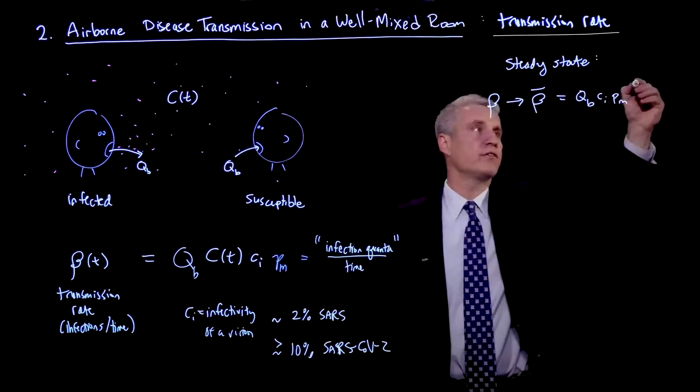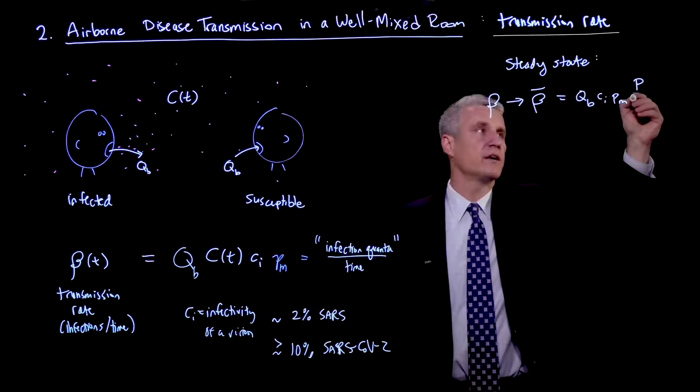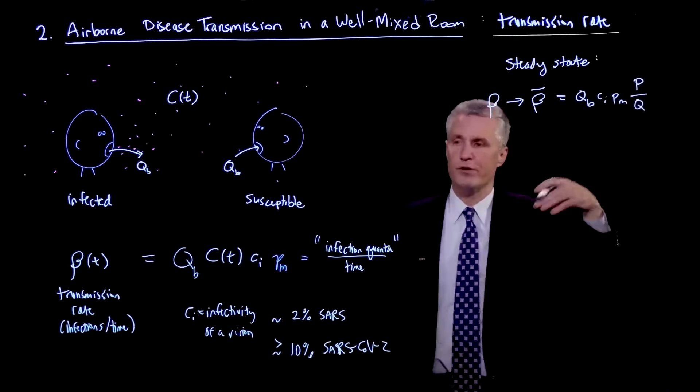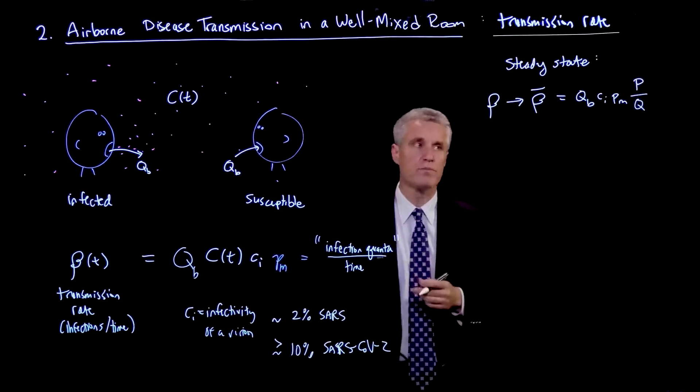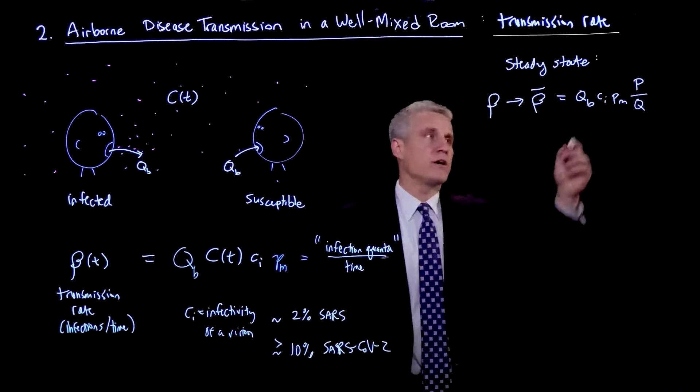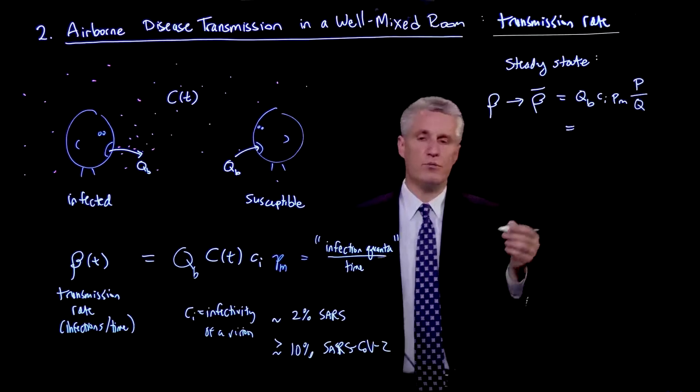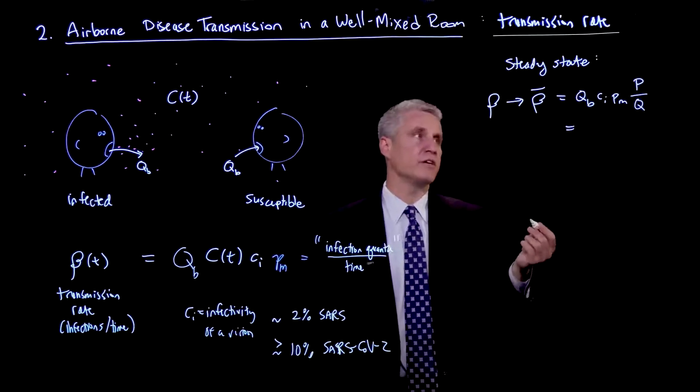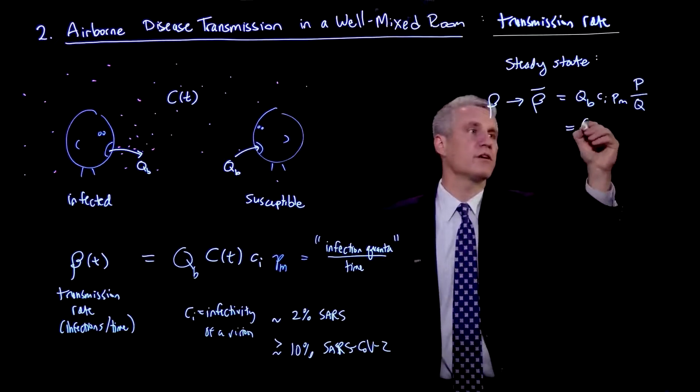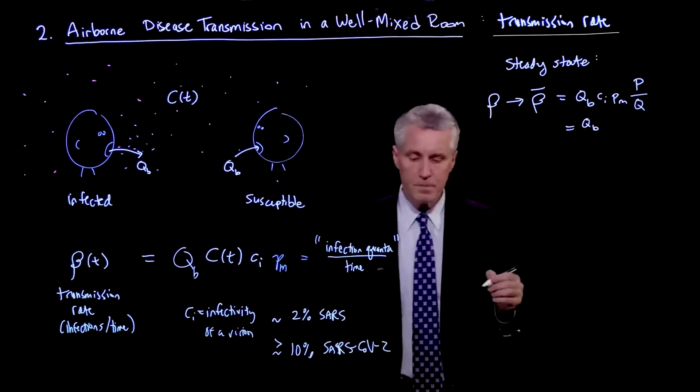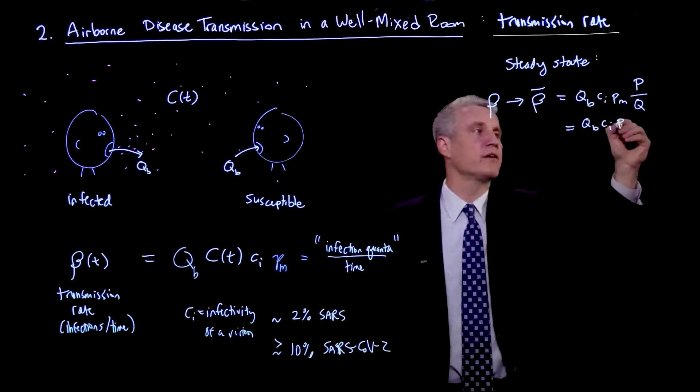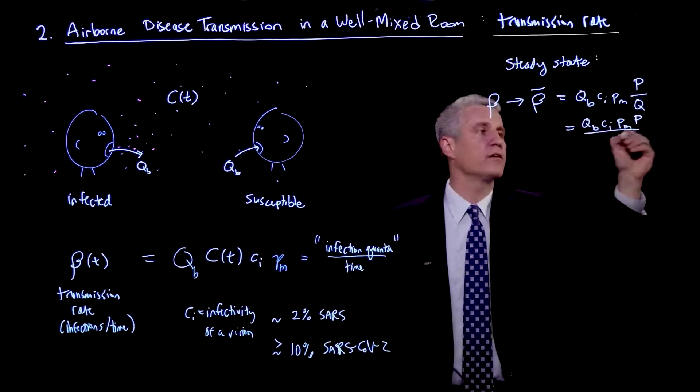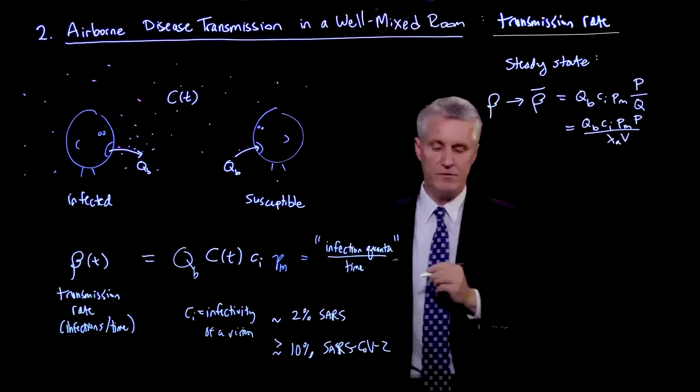QB, CI, PM, and then the steady state C, which is the production rate P divided by the outdoor air flow rate Q. And another way we can write that is, remember Q we can write as lambda A times V. So this is QB. And in fact, I'll write it one more time this way: CI, PM, capital P over lambda A, V.